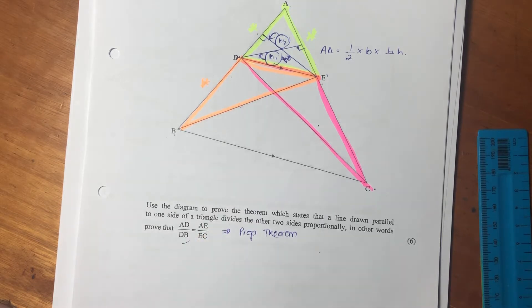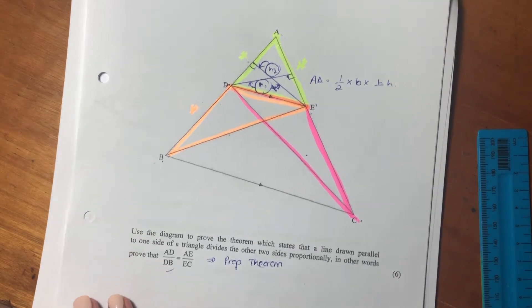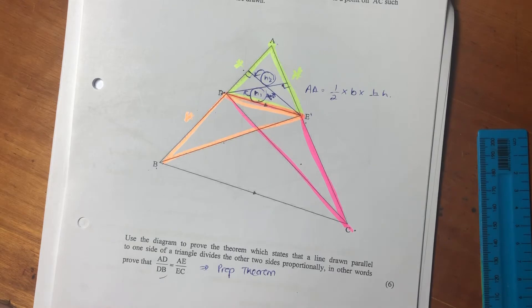So effectively, what they're asking us to prove is, they're saying, please just prove the proportionality theorem. So what we're going to do is we're going to use area to do that.